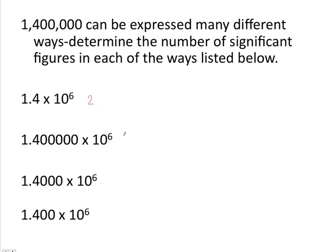In the next example, I want to show that all of the zeros in my value, 1,400,000, are significant. So I've written this number in scientific notation but including all of the zeros. Because any zero to the right of a number with a decimal point is significant, this figure has seven significant figures.